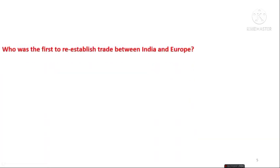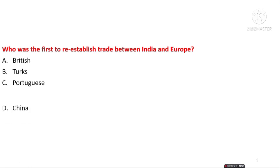The next question is: who was the first to re-establish trade between India and Europe after the Constantinople collapse? The options are British, Portuguese, and China. The answer is option C — the Portuguese were the first to re-establish trade between India and Europe.